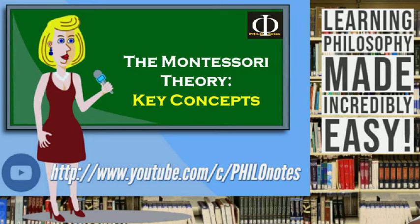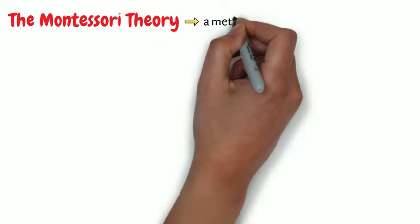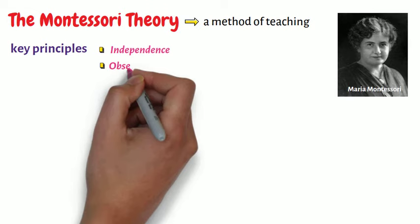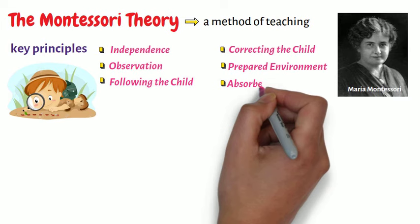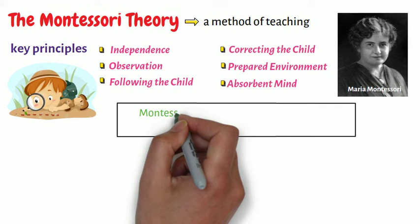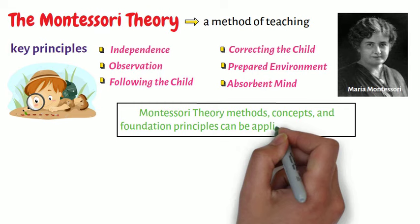The Montessori theory is a method of teaching developed by Maria Montessori where the key principles are independence, observation, following the child, correcting the child, prepared environment, and absorbent mind. It is important to note that the Montessori theory methods, concepts, and foundation principles can be applied across all ages.